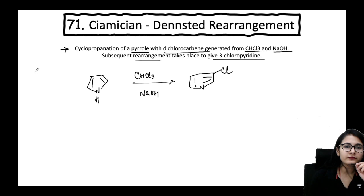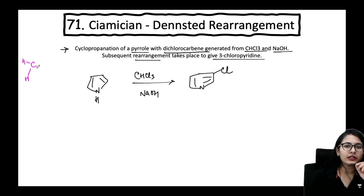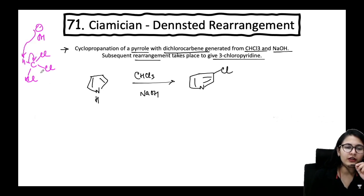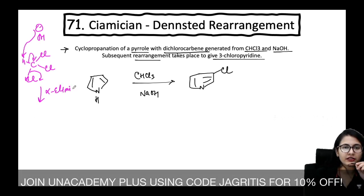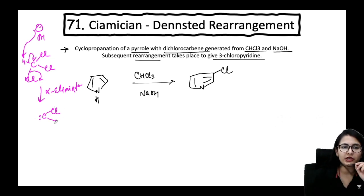First, understand what the CHCl₃ and NaOH combination does. The chloroform molecule has three chlorines. OH⁻ as a base takes away the proton, giving alpha elimination — elimination of an electropositive and electronegative group from the same carbon. This results in dichlorocarbene (CCl₂) formation.